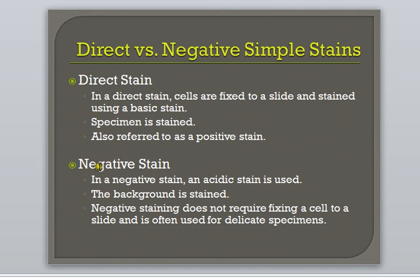On the other hand, negative stains use an acidic type stain, such as nigrosin. Recall that acidic stains have negatively charged chromophores. Thus, in a negative stain, the background is colored, not the specimen. Negative stains are often used for delicate specimens, due to the fact that you do not have to fix the specimen to the slide in the staining procedure.